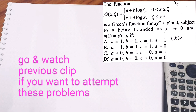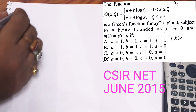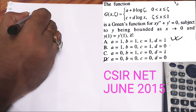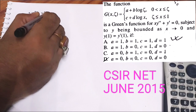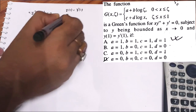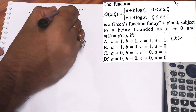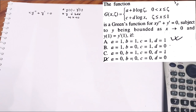Now come to this problem. Look at here: G(x, epsilon) — this is your Green's function given in a certain form and it involves a, b, c, d, all of which you need to find. The four options a, b, c, d are given. The Green's function of a certain differential equation you need to find out with the given boundary conditions. Look at the given differential equation and the boundary conditions: y at 1 should equal y dash at 1, and y is bounded as x tends to 0.